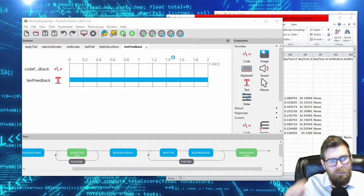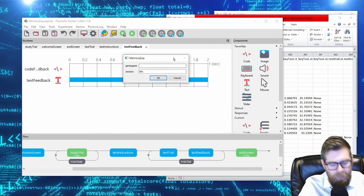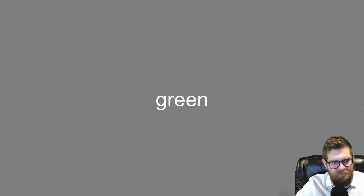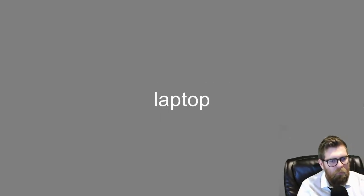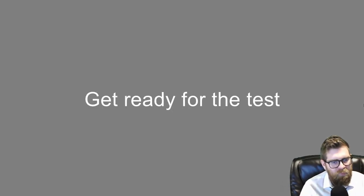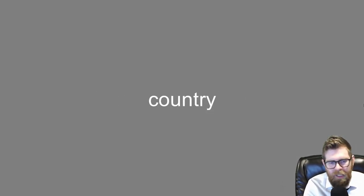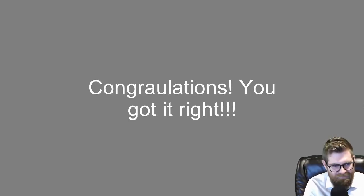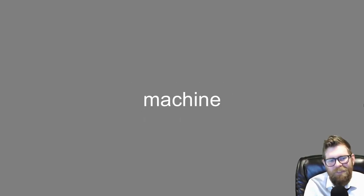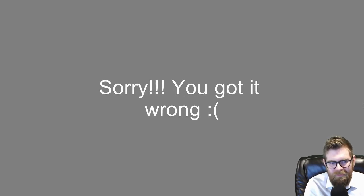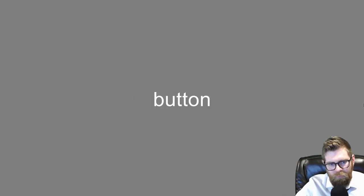Let's run the experiment and see the feedback working. Welcome screen, six study words cycle through. At test: I say 'yes' to the first item — 'Sorry, you got it wrong' — that was a new item, so a false alarm. I say 'yes' to cliff — 'Congratulations, you got it right.' I say 'no' to machine — that's a miss. We're now getting feedback based on responses.